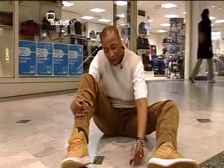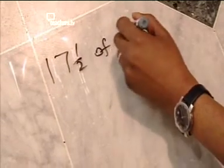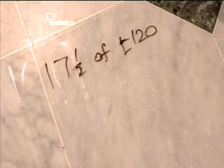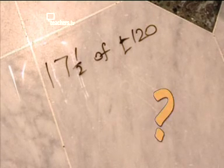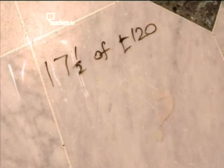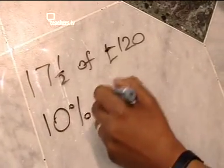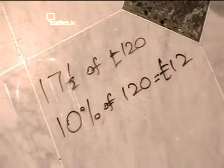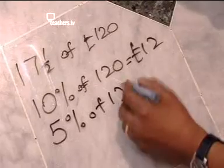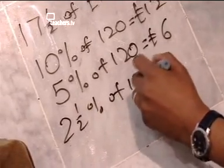Most of the things that we buy contain Value Added Tax — VAT at 17.5%. But how can we work out 17.5% of £120 without using a calculator? 17.5% seems like an awkward amount, but there's an easy way. 10% of £120 is £12. 5% is half of that, which is £6. And 2.5% is half of 5% again, which is £3.